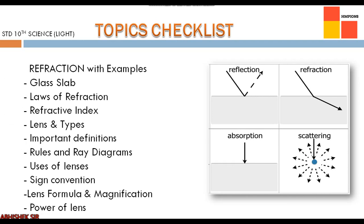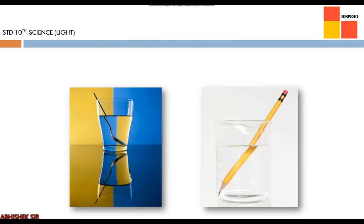These topics will be studied in this chapter and in this video. Topics are: refraction with examples glass slab, laws of refraction, refractive index, lens and types, important definitions, rules and ray diagrams, uses of lenses, sign convention, lens formula and magnification, and the last topic will be power of lens.